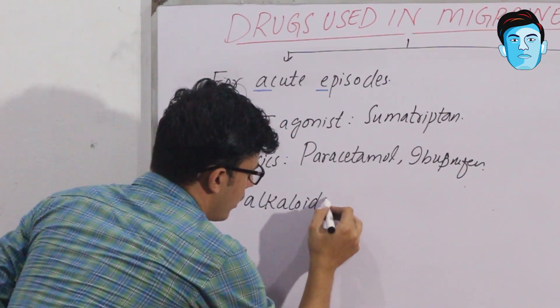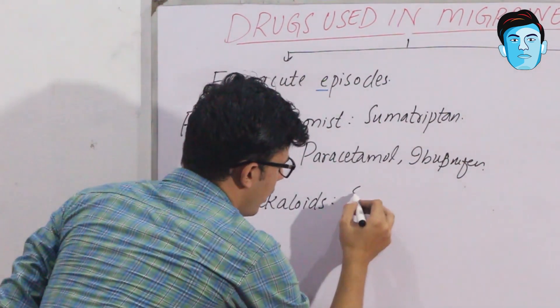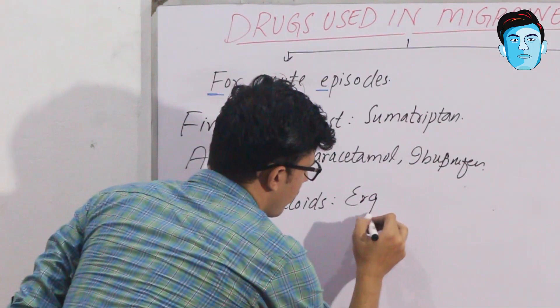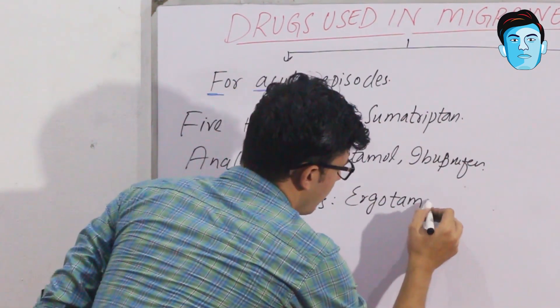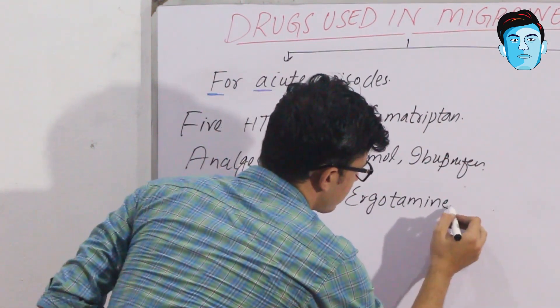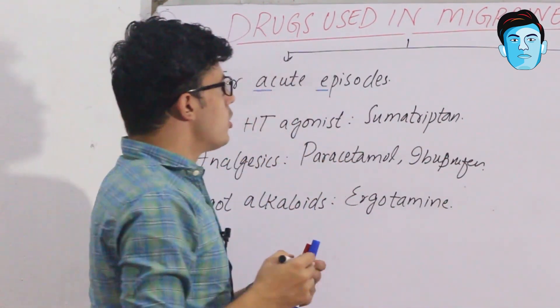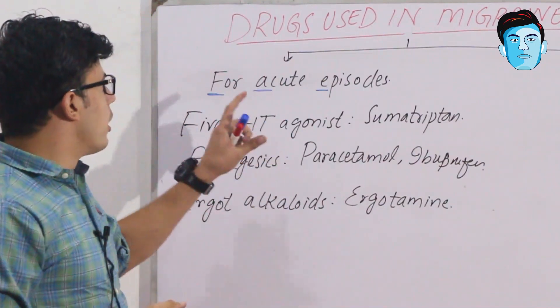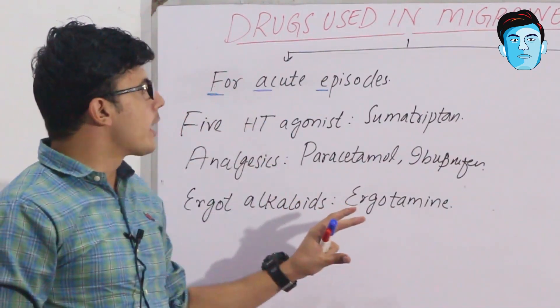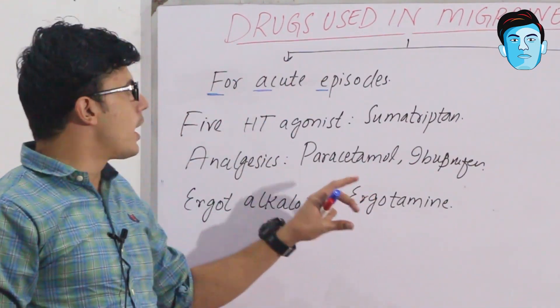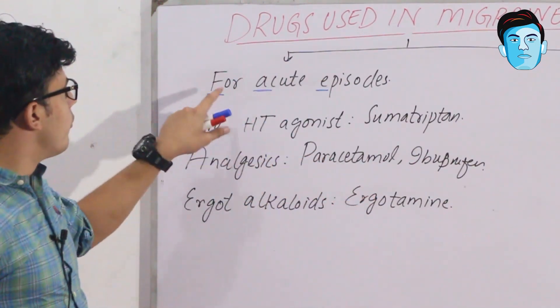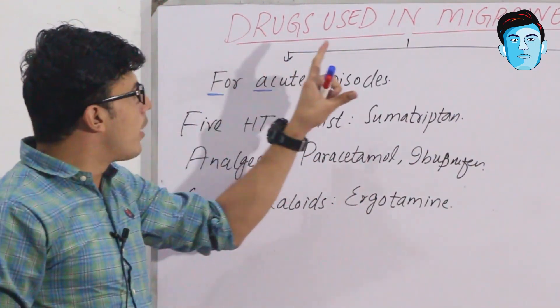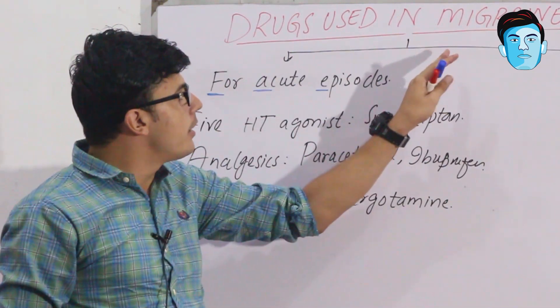In the class of ergot alkaloids, we have ergotamine. So it is worth noting the drugs that are coming under the class used in migraine.